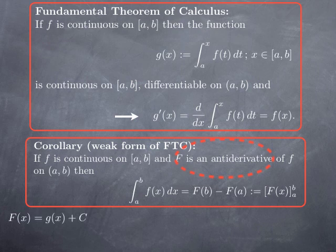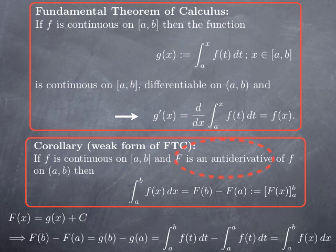In other words, capital F(x) is really just g(x) plus some constant C. That means when we take F(b) minus F(a), we get g(b) + C minus g(a) + C. The constant C cancels out, leaving just g(b) minus g(a). By definition, g(b) is the integral from a to b of f, and g(a) is the integral from a to a of f, which is 0 because we integrate over an interval of width 0. So F(b) minus F(a) equals the integral from a to b of f — exactly what we wanted.